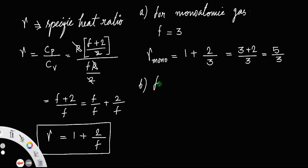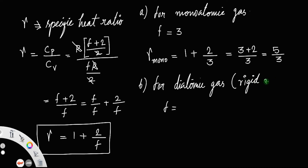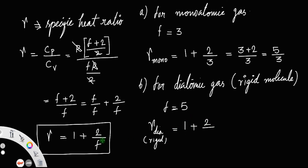For a diatomic gas there are two kinds: rigid and non-rigid. Taking the rigid diatomic molecule, it has 5 degrees of freedom. So gamma_diatomic(rigid) = 1 + 2/5 = (5+2)/5 = 7/5. That is the gamma for diatomic molecules of rigid type.